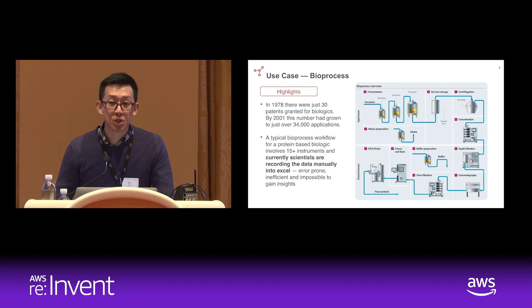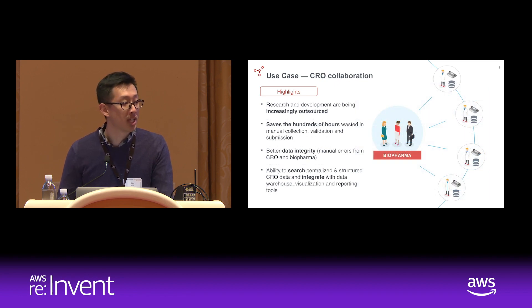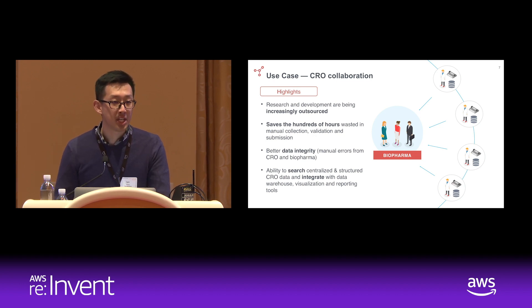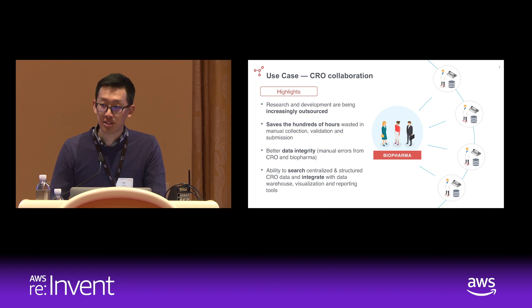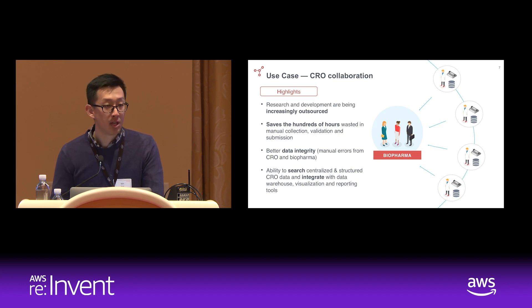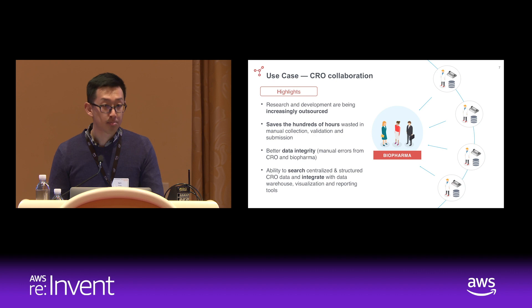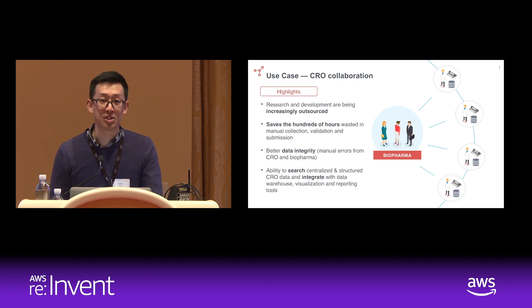Another trend is that it's not only instruments that are producing data. There are a lot of CROs contributing to data fragmentation and data silos — they are producing data and sending Excel files to biopharma companies. What we provide in that case is to leverage the integration engine to detect changes in Box, SharePoint, or some file sharing system, automatically get the file out, perform data cleanup and parsing to standardize and centralize the data. This saves time, ensures data integrity, and allows early adopters to push data into their data warehouse to apply analytics and visualization tools.